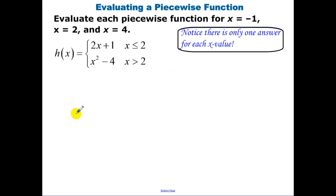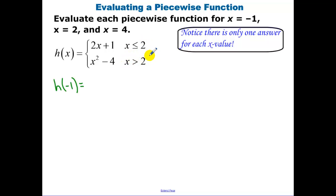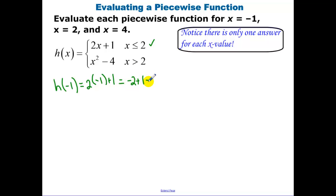Evaluating a piecewise function. To evaluate for negative 1 — h of negative 1 — we need to pick one of the two functions. We decide: is negative 1 less than or equal to 2, or greater than 2? Negative 1 is less than or equal to 2, so we plug it into the top function. We get negative 2 plus 1, which is negative 1.